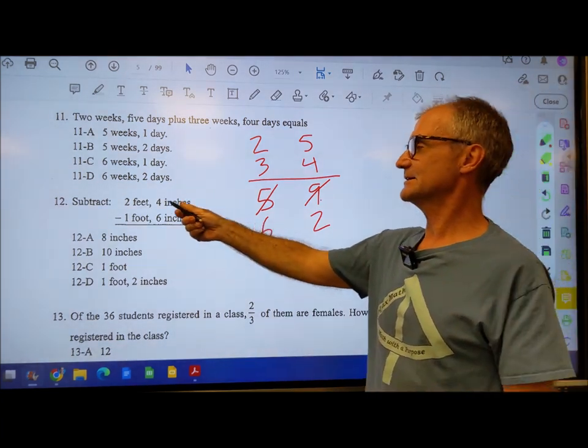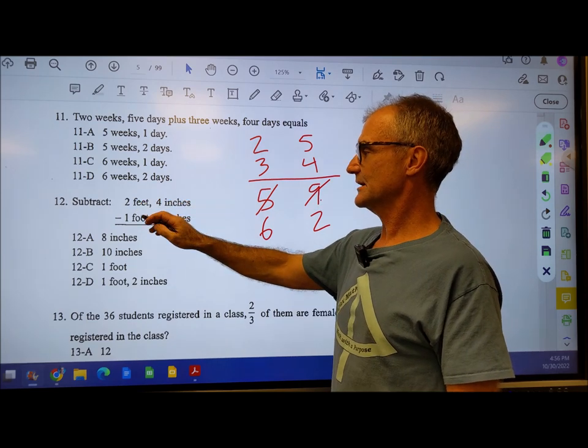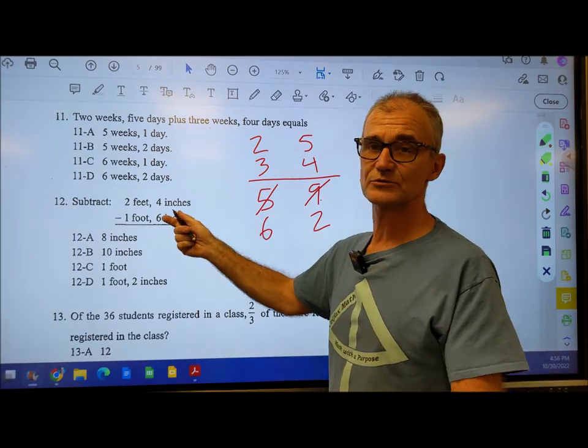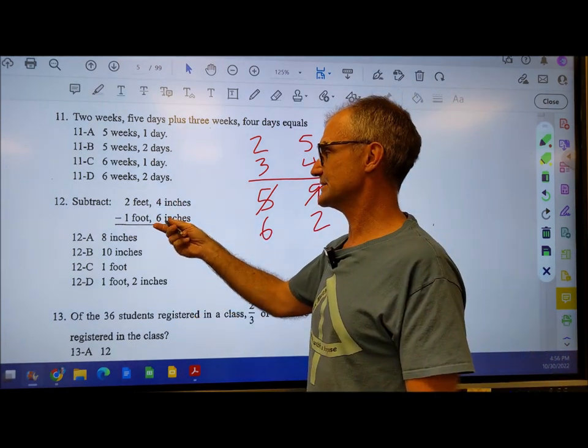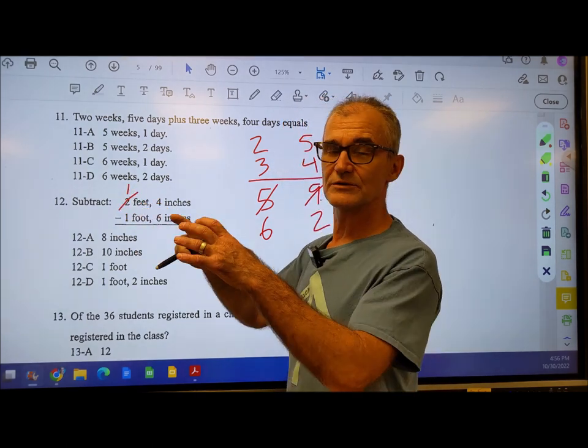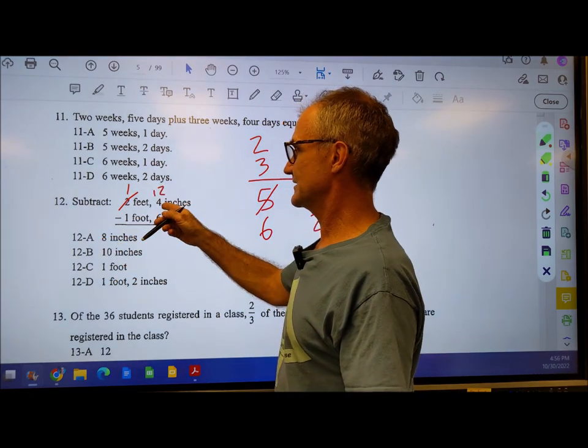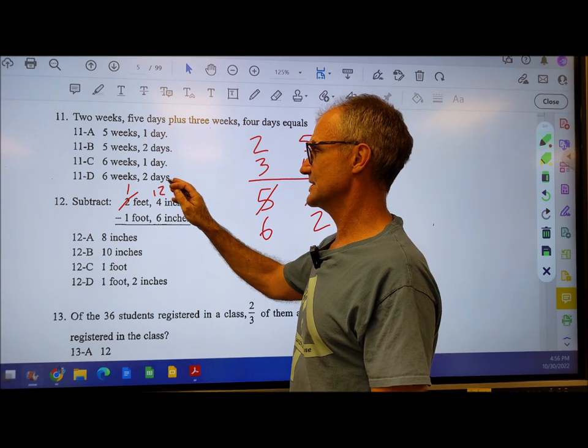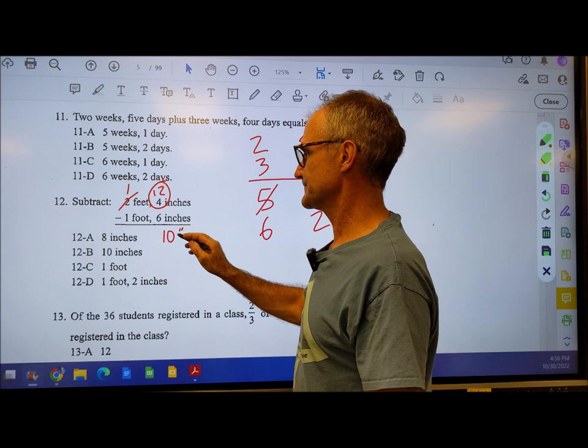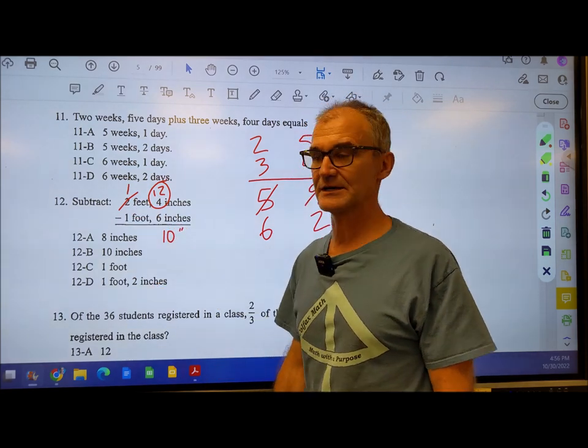Same thing here, different units. We have two feet, four inches minus one foot, six inches. You need to know there are 12 inches to the foot. I can't go 4 minus 6, so I borrow one foot here, turn that into 12 inches. Add 12 to this 4 to give me 16 inches. 16 inches minus 6 inches is 10 inches. 1 minus 1 is 0. The correct answer is 12b, 10 inches.